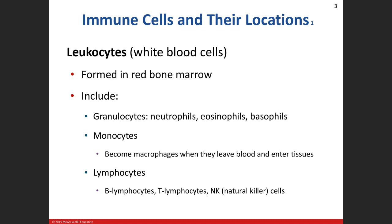All these cells are made in the red bone marrow. The different classifications we have are granulocytes, monocytes, and lymphocytes. Now we're going to go into a little bit more detail about what they do. We talked briefly about each one, but now — especially with the lymphocytes — we're going to talk about their involvement in acquired immunity and their roles in some of the innate immunity too.